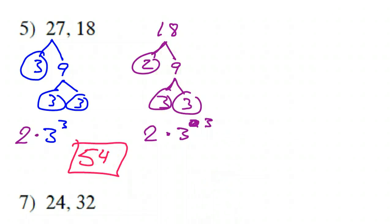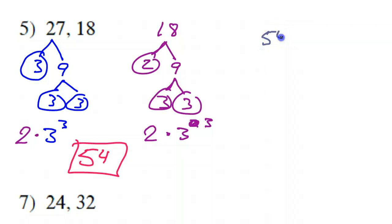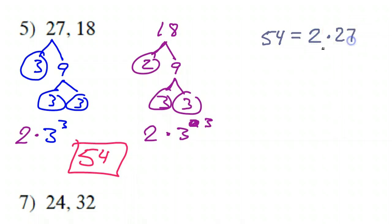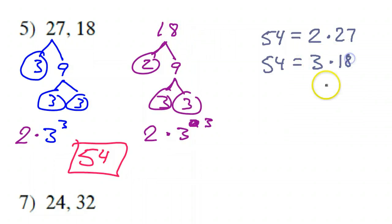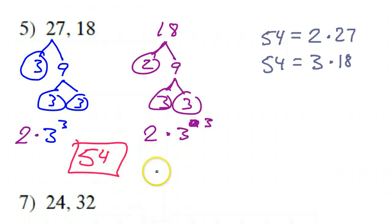Just to be clear, it makes sense because 54 is a multiple of 27 — 54 is 2 times 27 — and 54 is a multiple of 18 — 54 is 3 times 18. So we're turning 27 and 18 both into 54. That's the least common multiple.